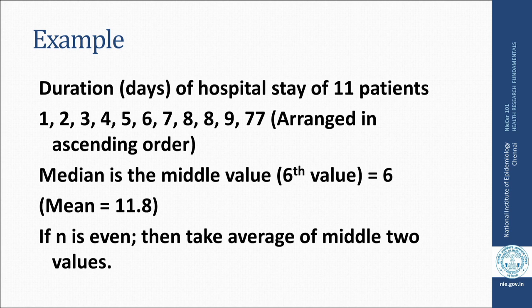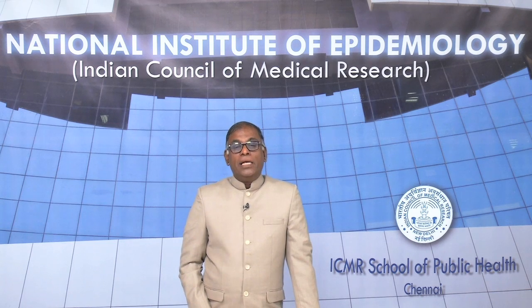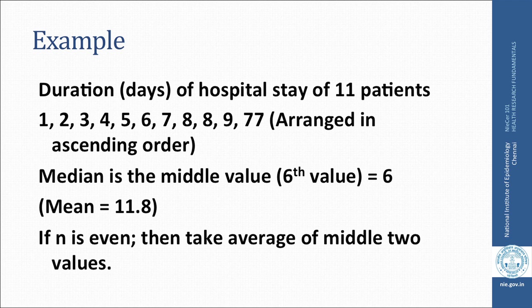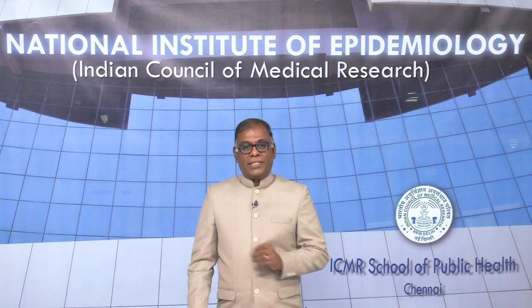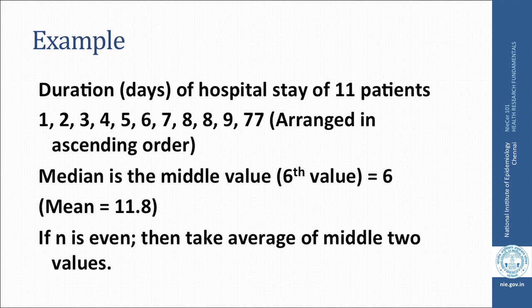For example, suppose you have data on the duration of hospital stay for 11 patients: 1 day, 2 days, 3 days, and so on up to 9 days for 10 patients, and for the 11th patient it is 77 days. Arranging in ascending order, the median is the middle (sixth) value, calculated as (n+1)/2 = 12/2 = 6, so the sixth value is 6 days. The mean for this dataset is 11.8 — clearly 6 is a more appropriate measure of average here.